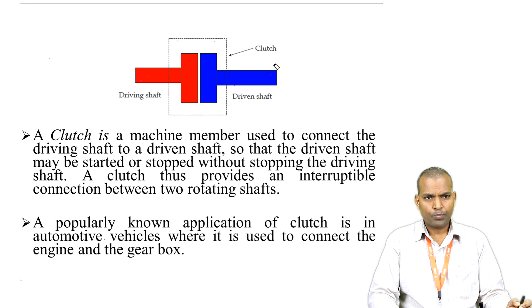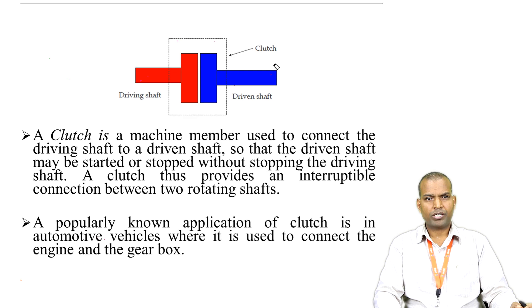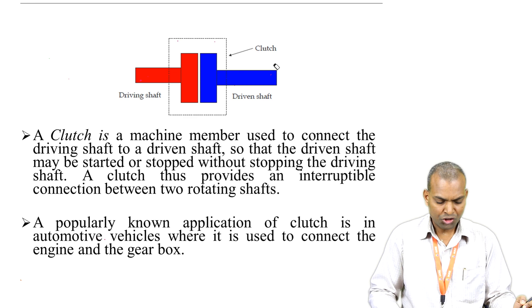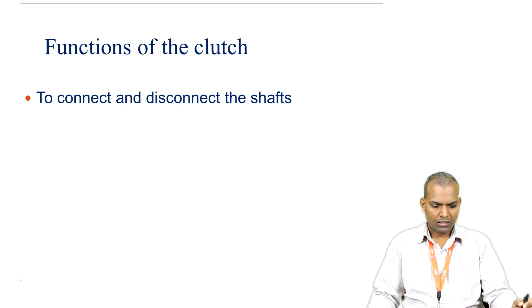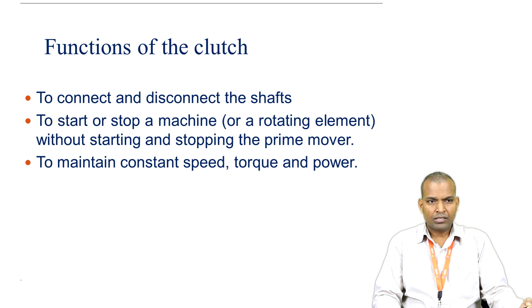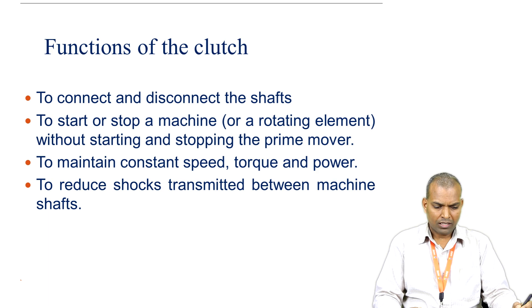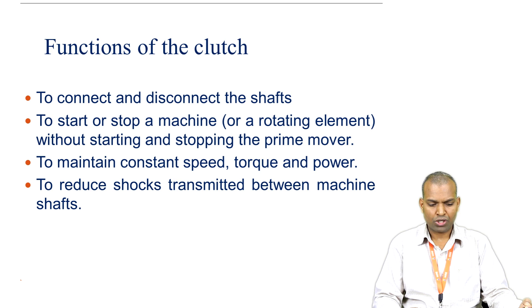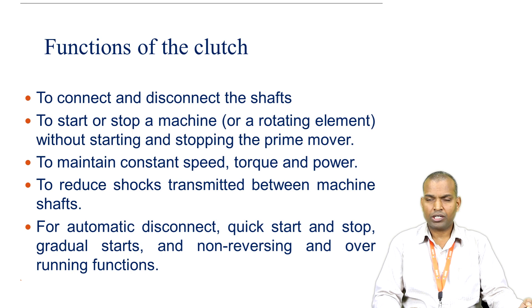A popularly known application of the clutch is in automotive vehicles, especially four-stroke engines, four-wheelers, and heavy vehicles — specifically the connection between the engine and the gearbox. There are five functions of a clutch: number one, to connect and disconnect the shafts; number two, to start or stop a machine without starting and stopping the prime mover; number three, to maintain constant speed, torque, and power; number four, to reduce shocks transmitted between machine shafts; and number five, for automatic disconnect, quick start and stop.